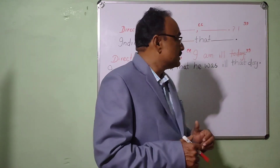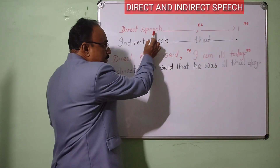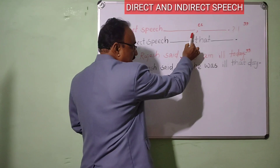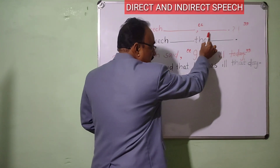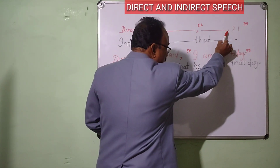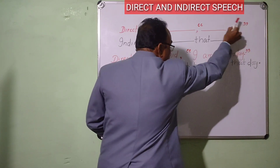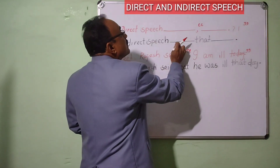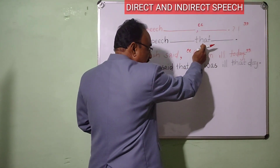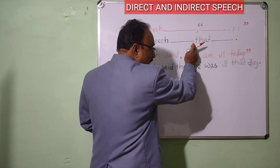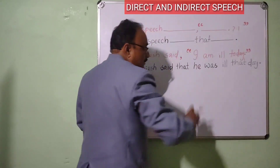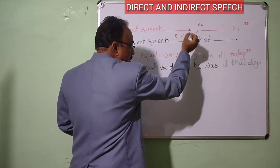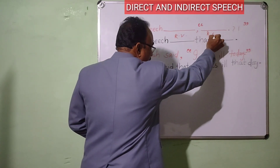Look at the example. This is the direct speech, this is the indirect speech. There is a comma, and there is a full stop within inverted commas. Again, in indirect speech, two clauses are connected — no comma here — at the end, a full stop. This part is the reporting clause, this part is the reported speech.